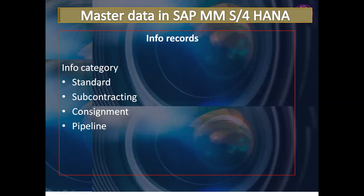Now, what are the different info categories? The category depends on what type of procurement you are doing. The first is Standard. If we maintain the info category as Standard in an info record, a price is maintained, and whenever the user tries to create a purchase order with the same material and vendor combination under this Standard info category, the price will automatically appear in the system.